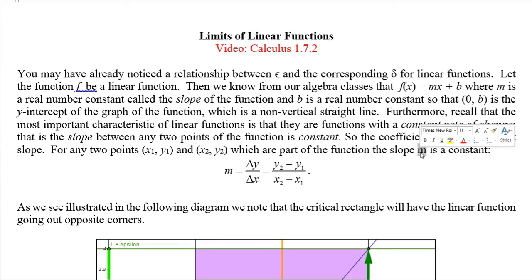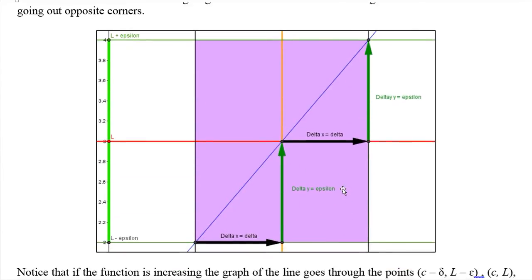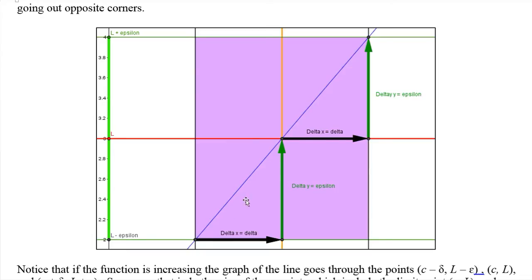So now let's look at the little box that we were looking at. Here we have our linear function and we're interested in a limit here which is going to be actually a point on the graph for a linear function so that this is a continuous function. So this is actually the point (c, f(c)) or (c, L), where L is f(c). And so we have our line right here, and we draw our little critical box.